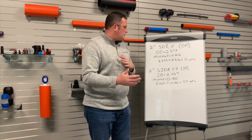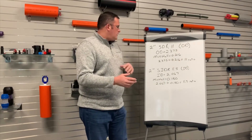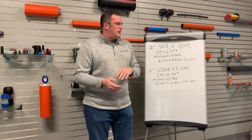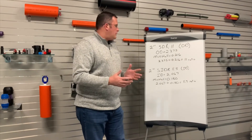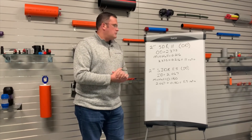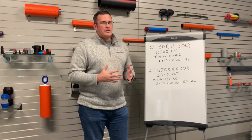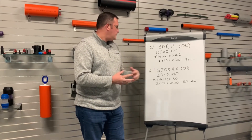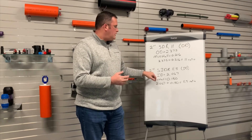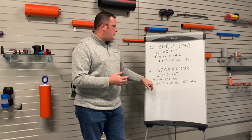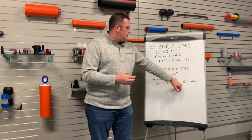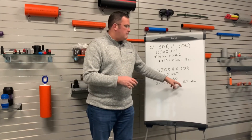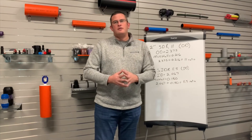Changing gears just a little bit — when we talk about SIDR, it's basically the same calculation, only it's constrained by the ID of the pipe. It's very similar math. ID divided by minimal wall gives you a ratio of 11.5 in this instance.